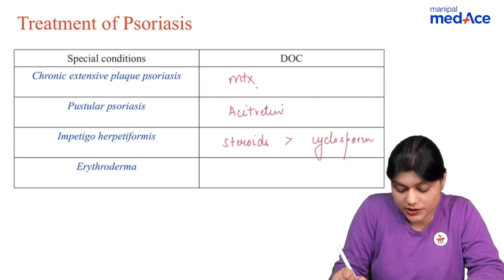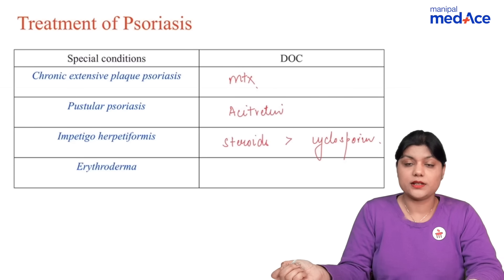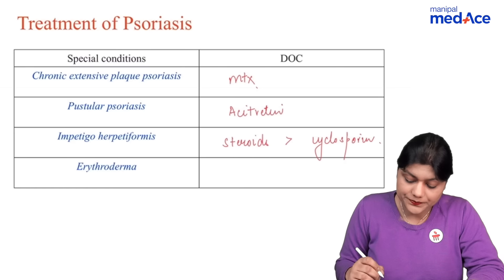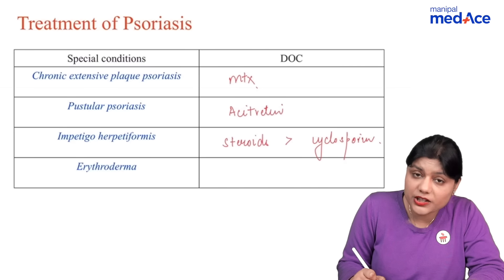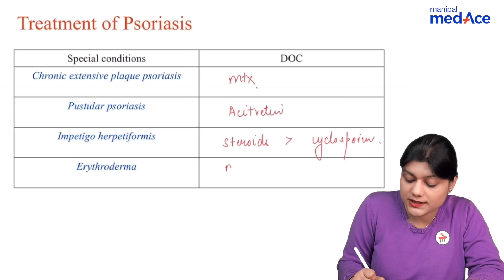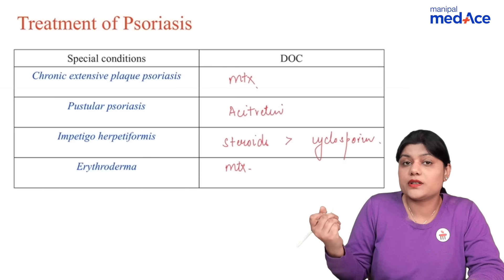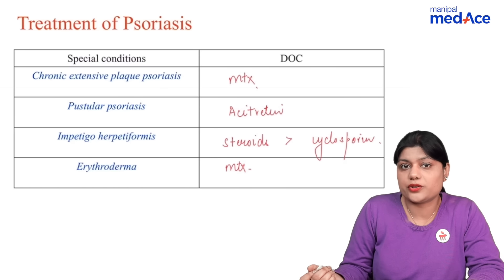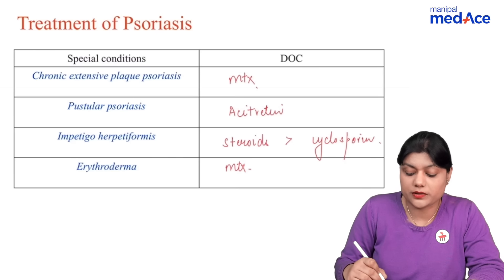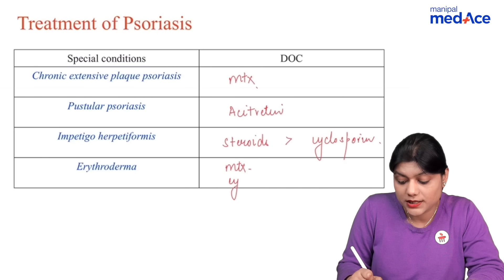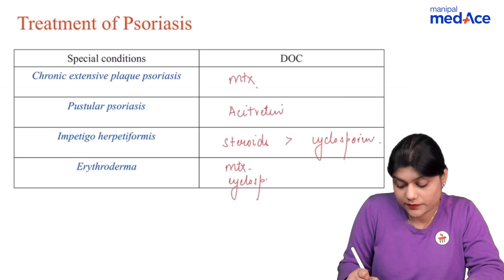Remember, cyclosporine is nephrotoxic and can increase the blood pressure of the patient. For erythrodermic psoriasis, the drug of choice is methotrexate. For severe, life-threatening erythroderma, the drug of choice is cyclosporine.